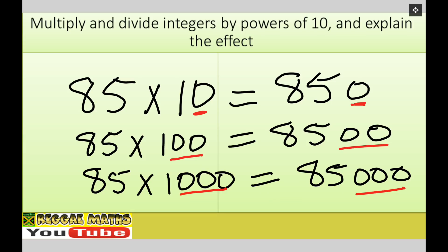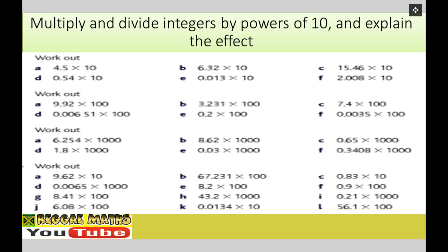Now let's work through some examples. We've got 4.5 multiplied by 10 — the number moves 1 place to the left, so the answer is 45. For B, the number moves 1 place to the left: 10 times 6.32, the answer is 63.2. And 15.46 times 10, the answer is 154.6.